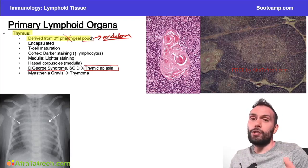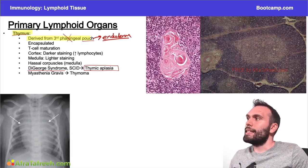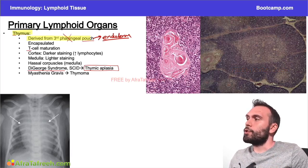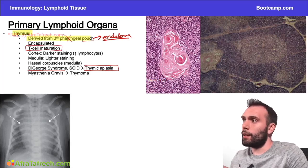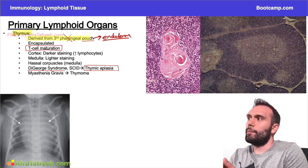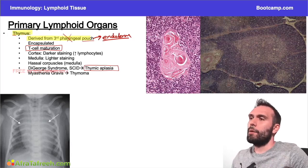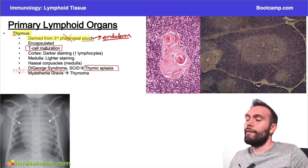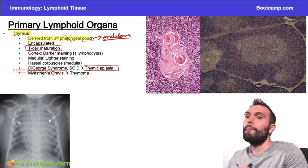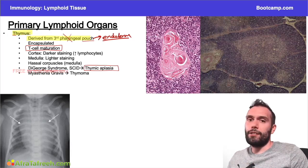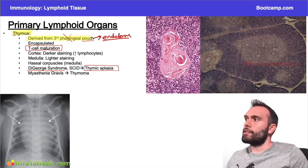DiGeorge syndrome has implications in the lymphoid system. Remember, T for thymus means T cell maturation. If the thymus isn't working, the T cells are not going to mature like they should. There's a selection process that happens in the thymus as T cells prepare for maturation. So if we have thymic aplasia, we're not going to get T cell maturation, which will have some pretty significant consequences.